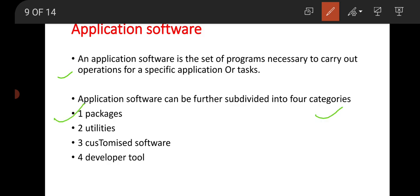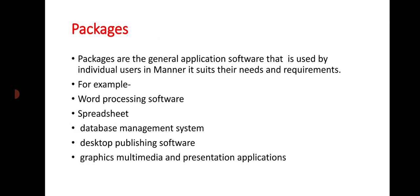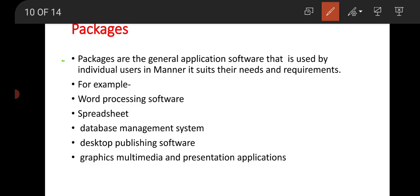The four categories are: packages, utilities, customized software, and developer tools. First, packages are general application software used by individual users in the manner that suits their needs and requirements. Examples include word processing software, spreadsheet software, database management system software, desktop publishing software, and graphics, multimedia, and presentation applications.